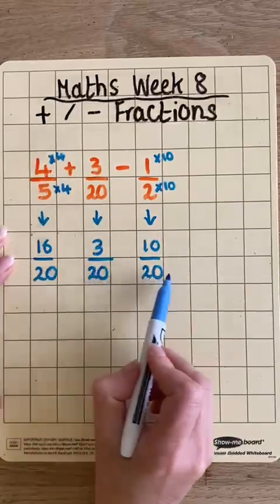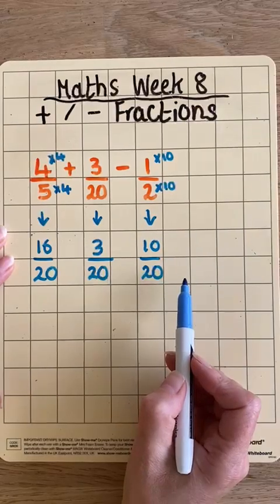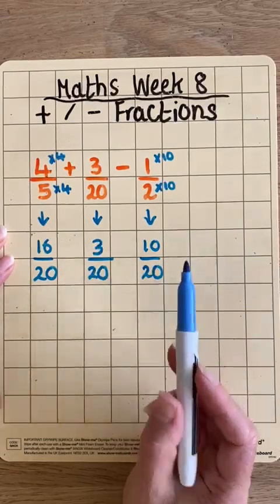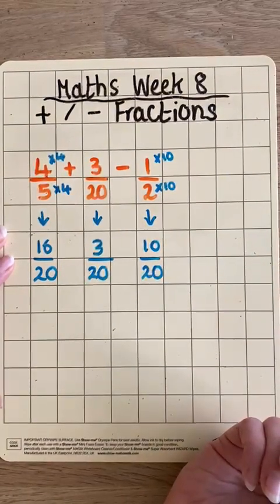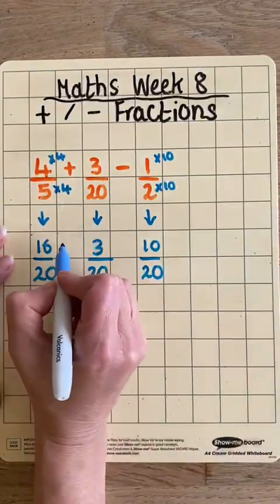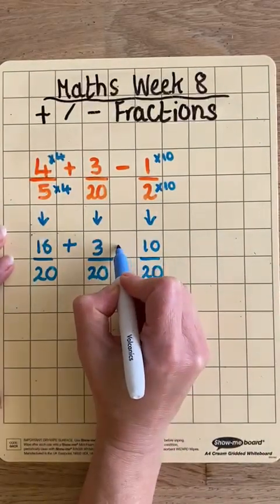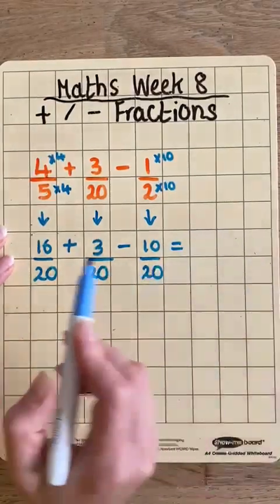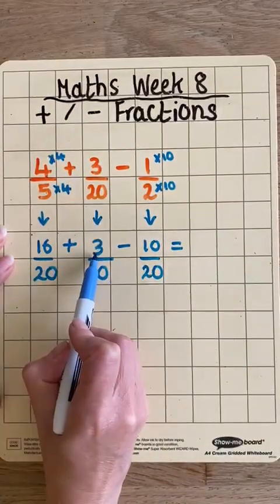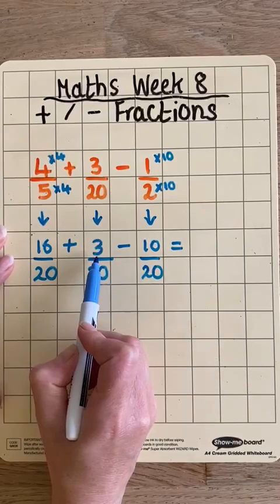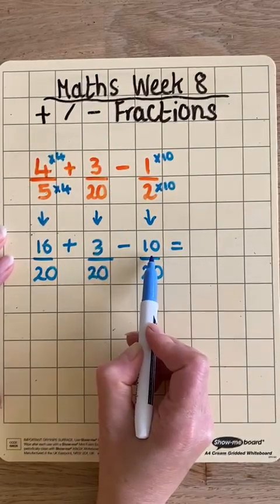Now all of my fractions have 20 as their denominator, so I will be able to carry out the sum as I did before when all the denominators were the same. Let's put the rest of the sum in. I'm adding and subtracting there. 16 add 3 is 19, take away 10 is 9.